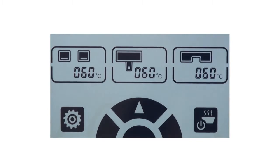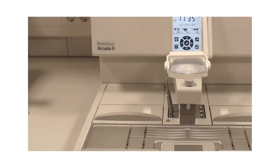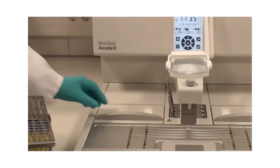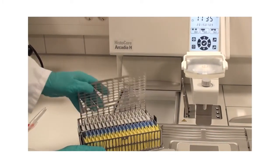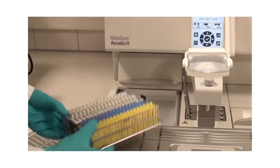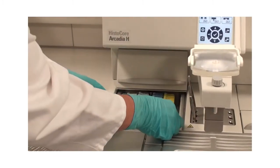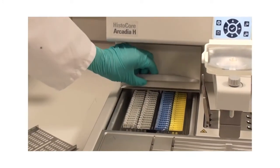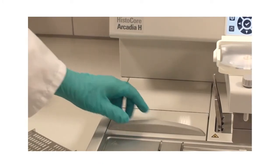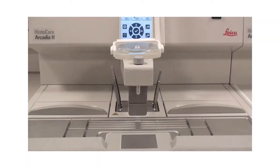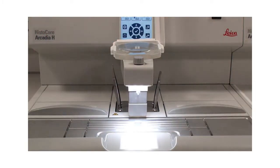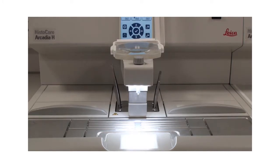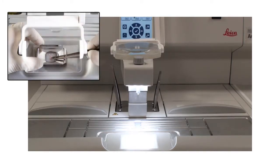When your Arcadia H is heated, you may store your cassette baskets in the cassette bath and start the embedding process. An LED light provides bright, even illumination of the embedding area and the cold spot for optimum visibility during paraffin dispensing and orientation of the tissue specimen.